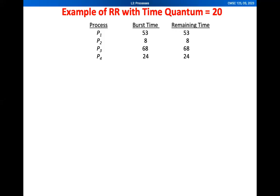Hi everyone. In this video we are going to discuss another example of Round Robin or RR CPU scheduling with time quantum 20. What it means is each process will be given a chance to execute for 20 milliseconds before it gets preempted and switched to another process. We have four processes P1 to P4 in the same order of arrival, and assuming that these processes have all arrived at time zero.